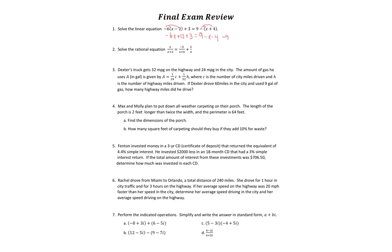I'm going to group all my stuff together. So plus 12 plus 3 is 15, and 9 minus 4 is going to be 5. From here I'm going to add 6x to both sides. So I'll have 15 equals 5 plus 5x. I'll subtract 5 from both sides, so I have 10 equals 5x. So x equals 2.